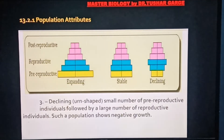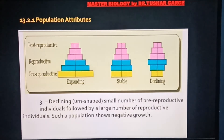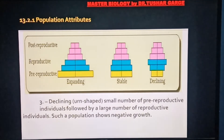तीसरा है urn-shape population। यहाँ pre-reproductive population बहुत कम है, reproductive population सबसे ज़्यादा है, और post-reproductive फिर कम हो गई। इस तरीके से यह population हमेशा negative growth को indicate करती है। विश्व के कुछ देश आज भी यह झेल रहे हैं जिसकी वजह से उनकी population लगातार कम हो रही है।